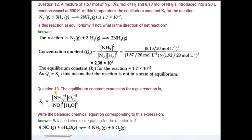Question number 13: the equilibrium constant expression for a gas reaction is given and you have to write the balanced chemical equation. Using the formula — concentration of product divided by concentration of reactant — NH3 and O2 are reactants, and NO and H2O are products, with stoichiometric coefficients 4, 5 for reactants and 4, 6 for products. This is question number 13.